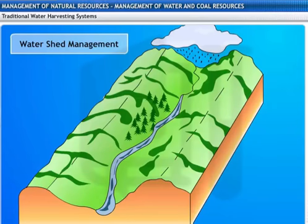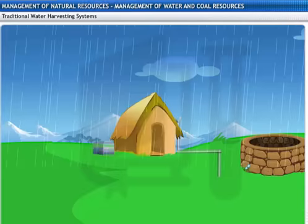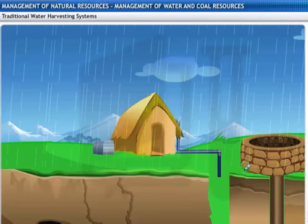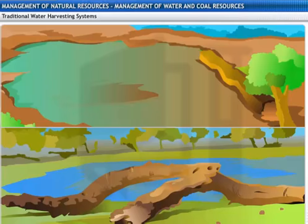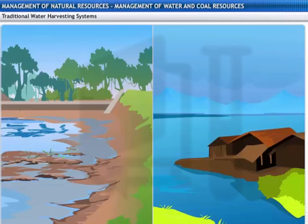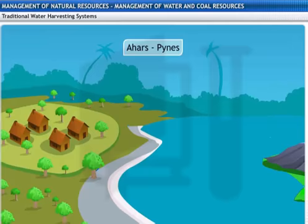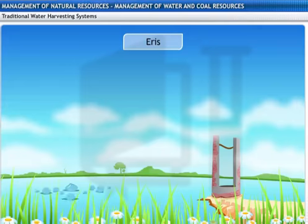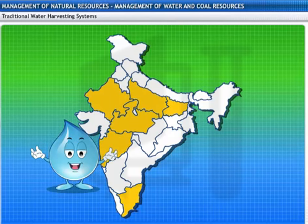Watershed management aims for water conservation in order to increase biomass production. Water harvesting is an age-old concept in India. Water harvesting techniques are named differently at different places, but the use remains the same. For example, they are called Khadins and Nadis in Rajasthan, Bhandaras and Thals in Maharashtra, Bundis in Madhya Pradesh and Uttar Pradesh, Ahars and Pynes in Bihar, and Eris in Tamil Nadu. I can take you on a tour of some of these places. Interested? Let's go!